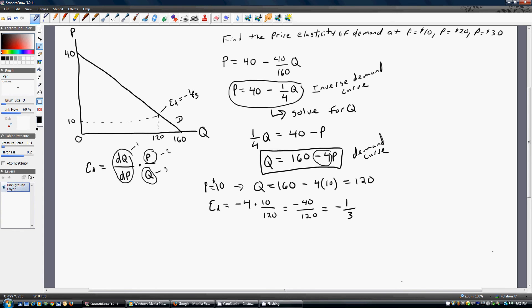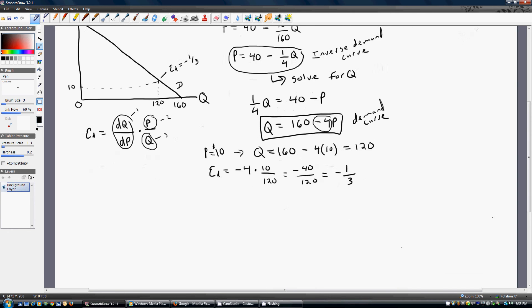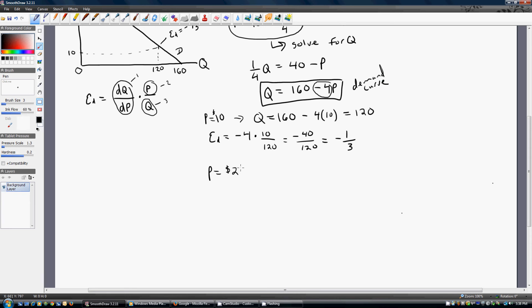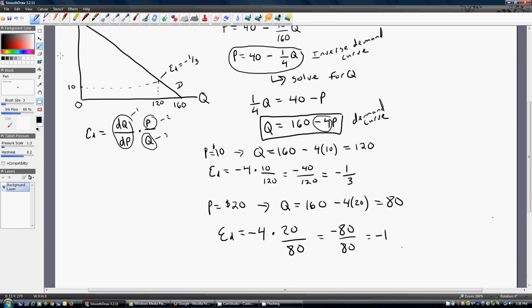Okay. Next, let's find the price elasticity of demand at $20. So when price is $20, quantity is going to be 160 minus 4 times 20. This is just 80. So going back to our formula, we need three things. The derivative of the demand curve with respect to price is minus 4. The price this time is 20. The corresponding quantity is 80. So we get minus 80 over 80, or minus 1. You can find that point over here. The elasticity of demand there is minus 1.